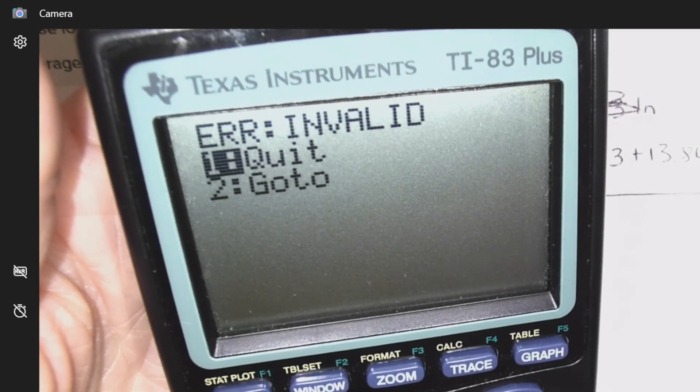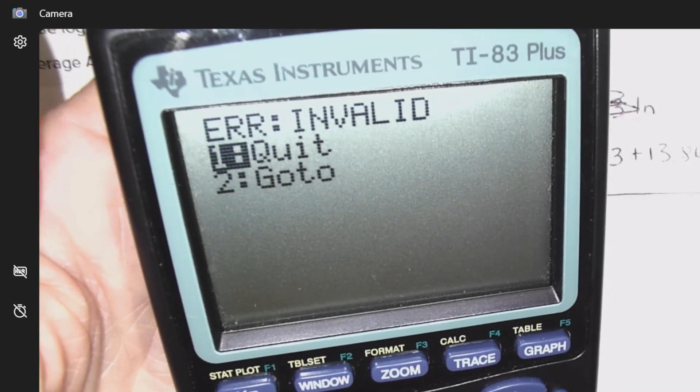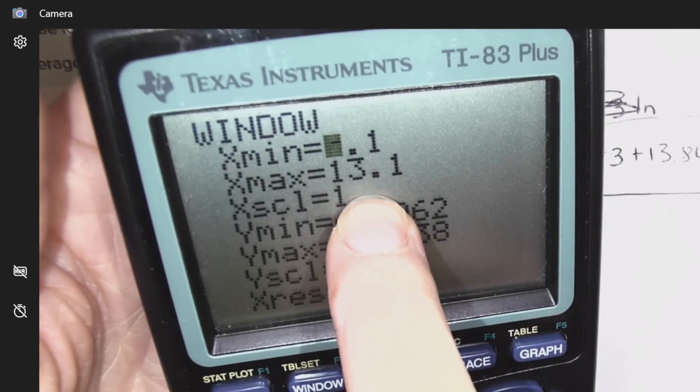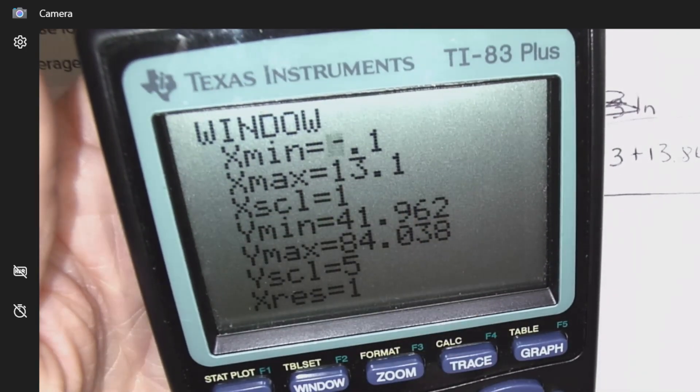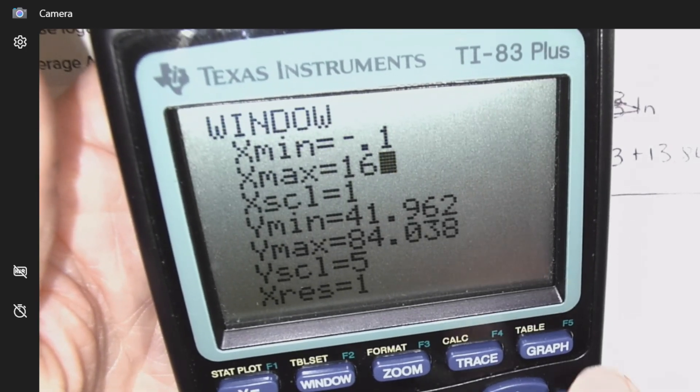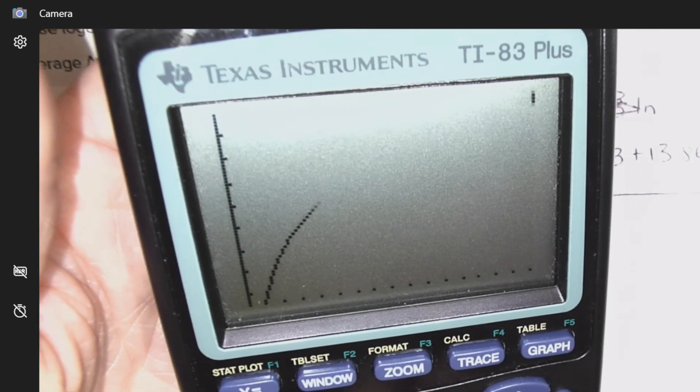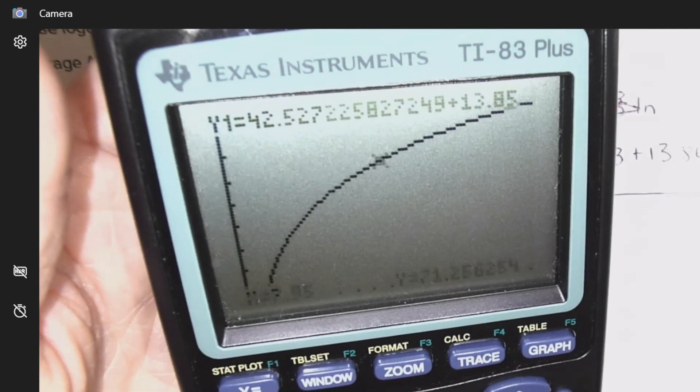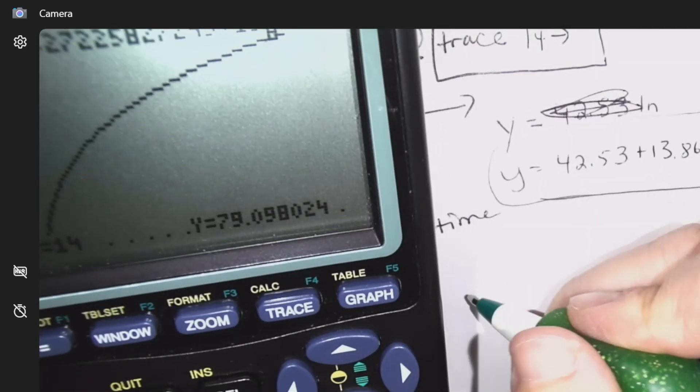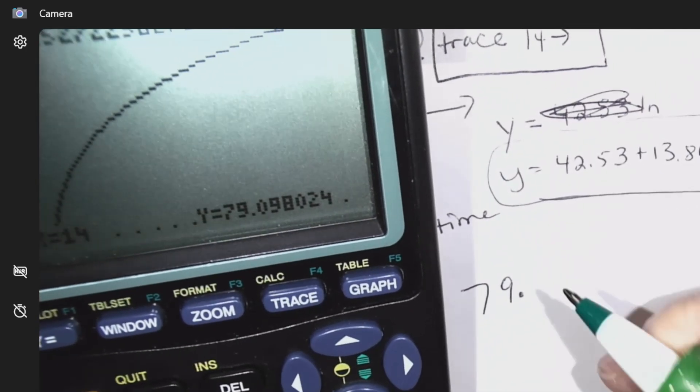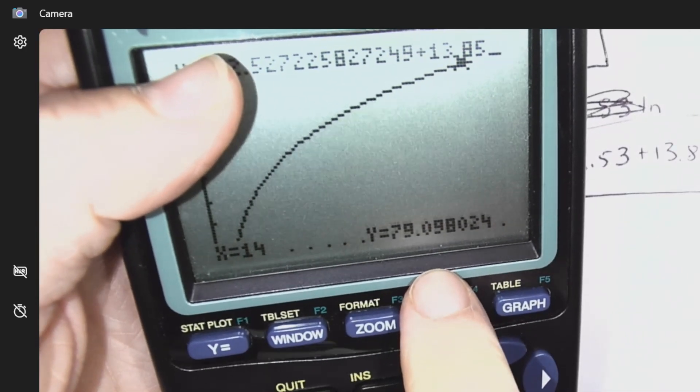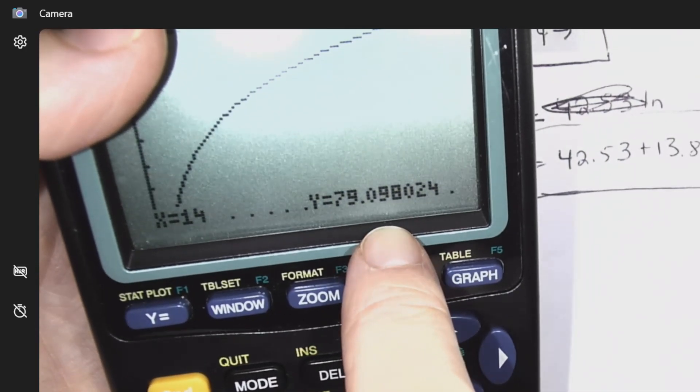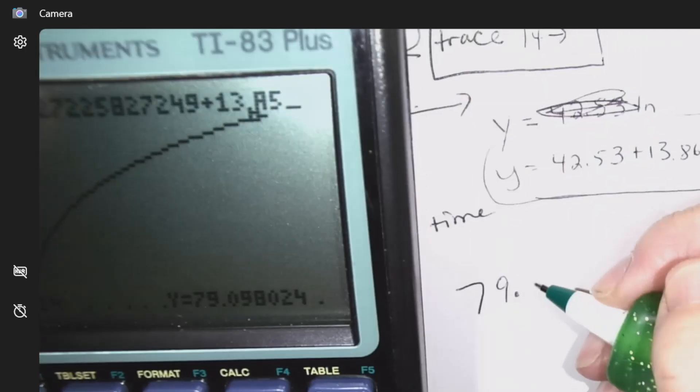Okay, trace 14, I got an error. So, I need to go back to my window, and here's why, because 14 wasn't in sight. So, we'll change that to a number that's bigger than 14. Now, I should be able to go there. Trace 14, 79 point, and you always go to two decimals unless it says. So, this would actually round to 10 after.